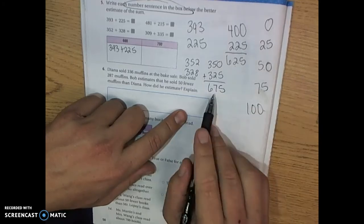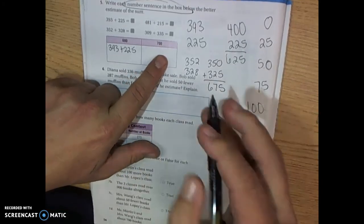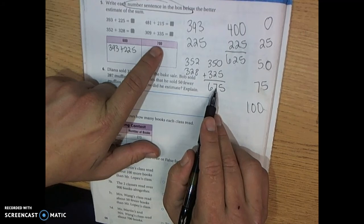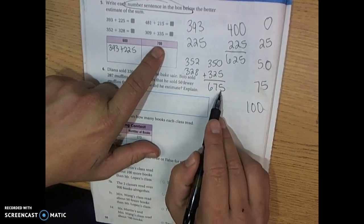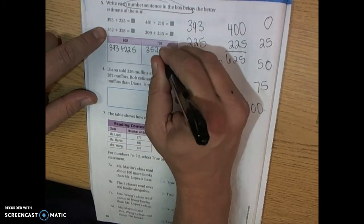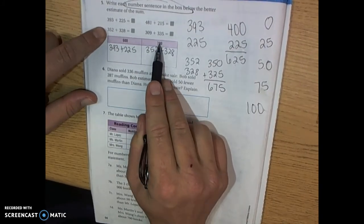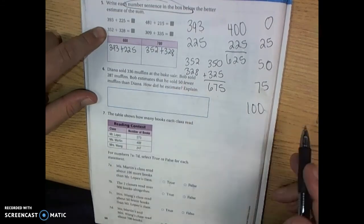675. 675 is closest to 700. So 700 would be the better estimate right here. So you take this number sentence and you put it in here because the 700 would be the better bet.